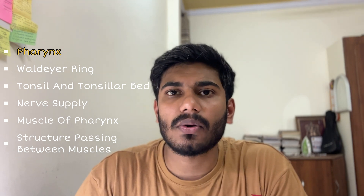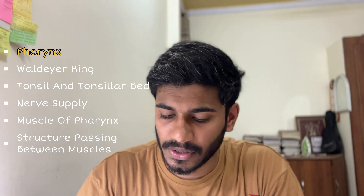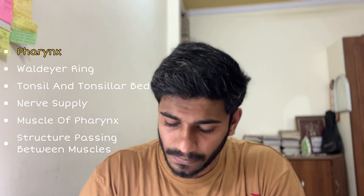The glossopharyngeal nerve is damaged in the tonsillar bed. For the pharynx muscles, you should know the nerve supply, insertion, and origin of all the muscles. There is one more thing — structures passing between the muscles of the pharynx.